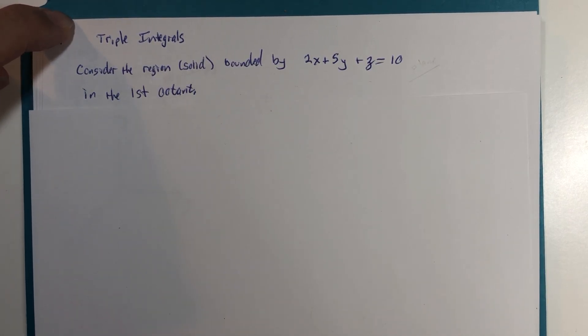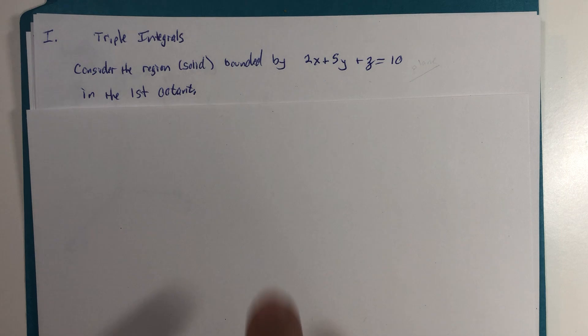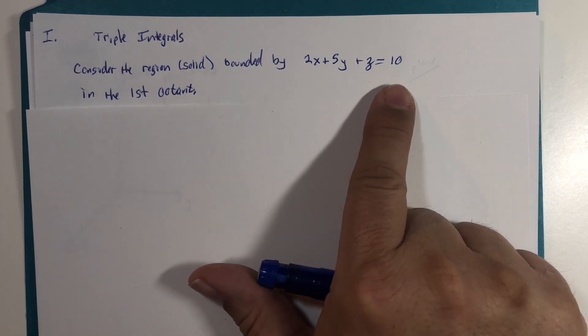Three iterations of integration. So this first little segment is to just start to consider what exactly the triple integral region of integration looks like. We're going to go back to one of our class favorites. So we're going to consider a region, a solid region, bounded by 2x plus 5y plus z equals 10.